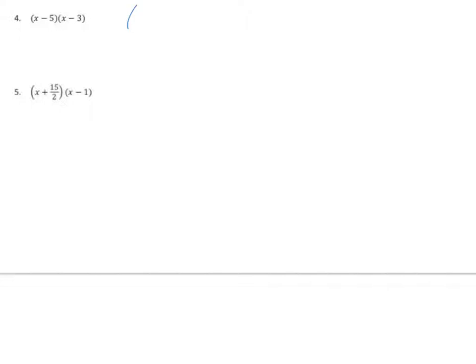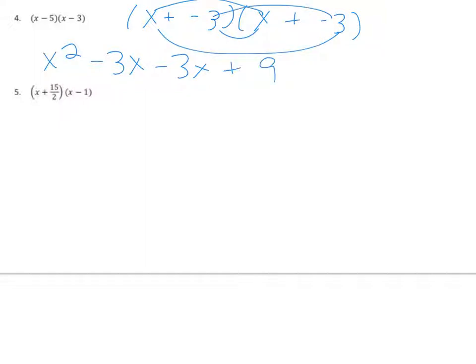Here, if you've got those negatives you're good, but if you need to rewrite them please do. I have first which is x squared, outer negative 3x, inner negative 3x, and last positive 9. Collect your middle terms and you get x squared minus 6x plus 9.